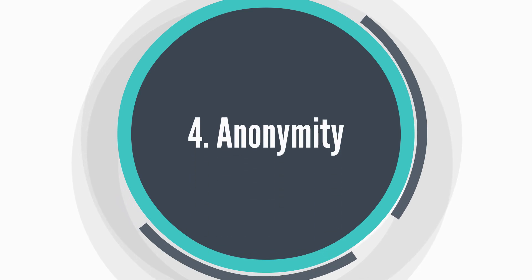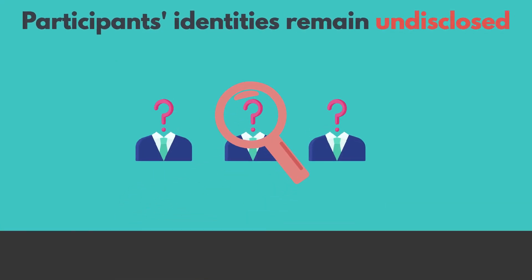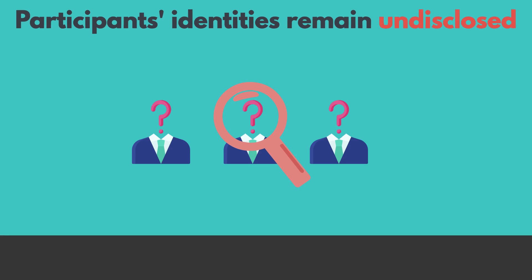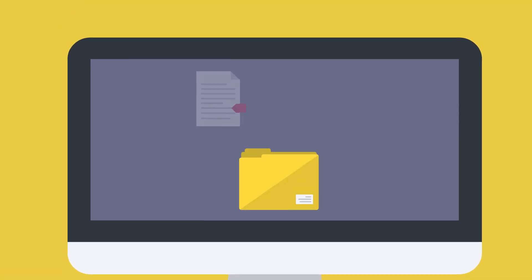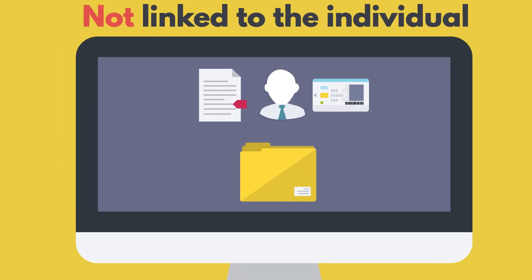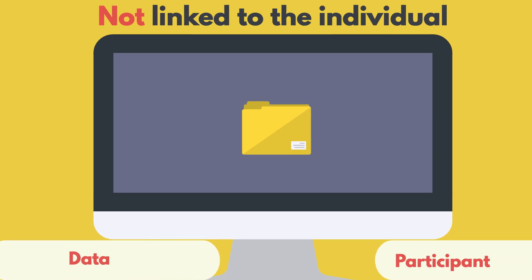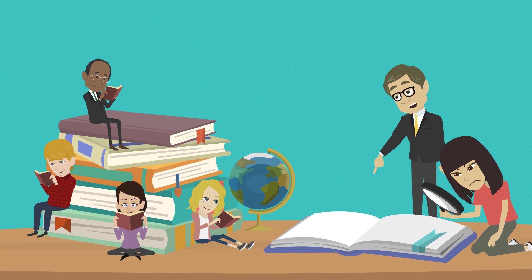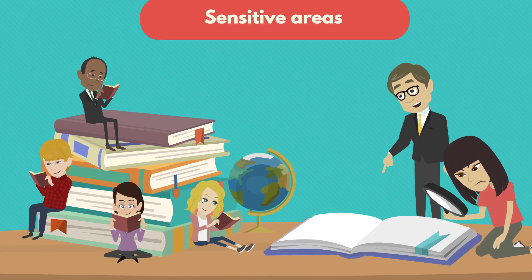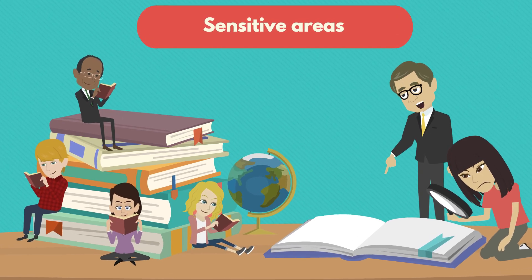4. Anonymity. Anonymity ensures that participants' identities remain undisclosed throughout the research process. Personal data collected during the study is not linked to the individual, preventing any connection between the data and the participant. This principle is particularly important in sensitive areas of research.